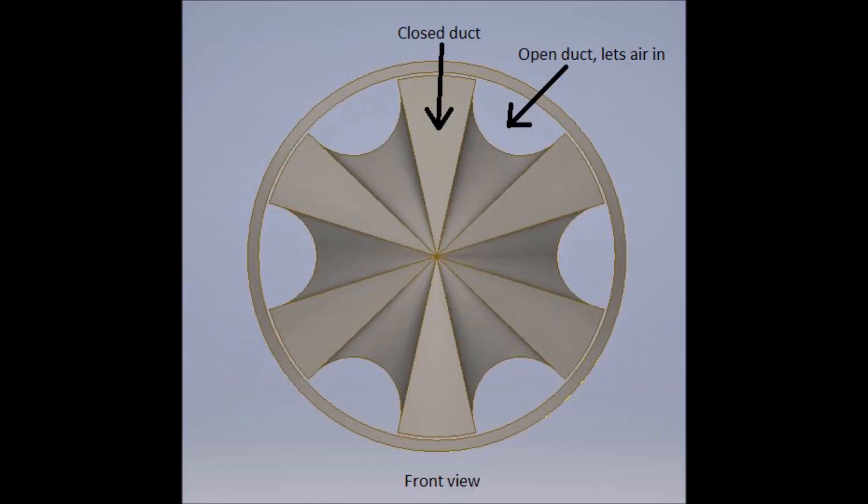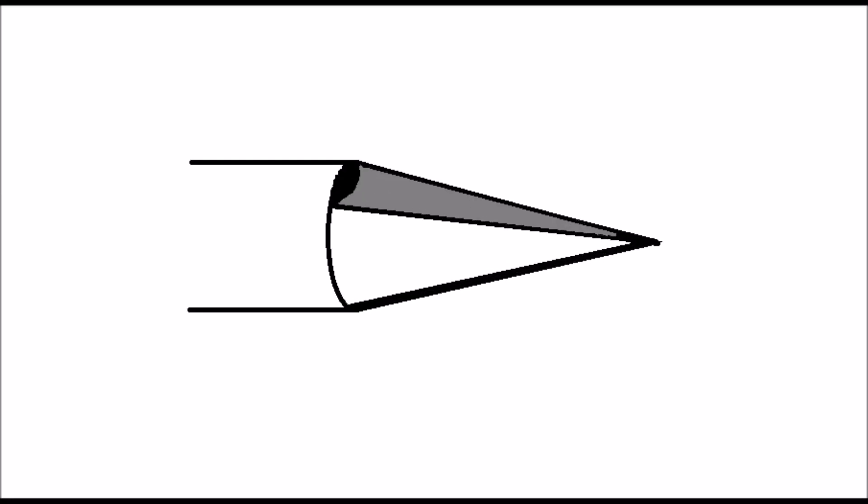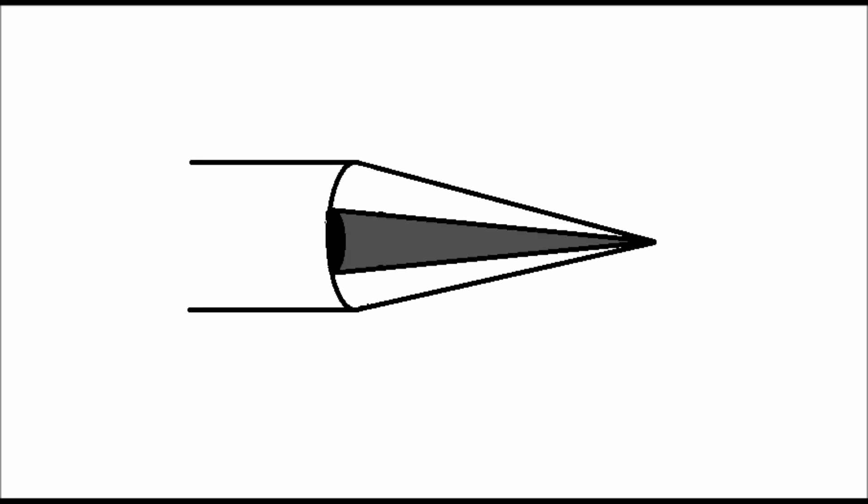In our previous designs, the nose cone consisted of compression ducts, which allowed the flow to enter, and closed sections, which shut it off. The whole assembly rotated, generating the pattern of flow and no flow necessary for the system to operate.